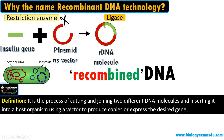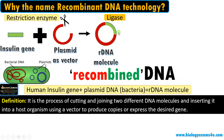Ligase enzyme is responsible for the formation of the phosphodiester bond. Now we have a recombinant DNA molecule. That means we have a human insulin gene of human origin and a plasmid DNA of bacterial origin forming a recombinant DNA molecule, and that is the speciality of recombinant DNA technology.